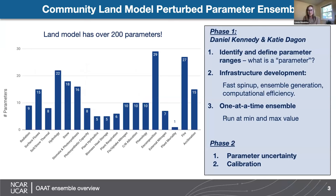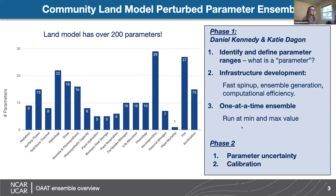There's a lot of infrastructure work that goes into making these types of experiments possible, and Katie Dagan and Daniel Kennedy have put years of work into preparing CLM to be able to run these types of simulations. First, they pulled out many — over 200 parameters in the land model — and developed some infrastructure to run fast spin-up and generate large perturbed parameter ensembles, and also improved computational efficiency along the way. Because of all this groundwork they've laid, they were able to run a one-at-a-time ensemble, where each parameter was run at its minimum and maximum value. We've learned a lot from this, identifying which parameters are influential, and then can move on to phase two, where we start quantifying parameter uncertainty and work towards a calibration methodology.